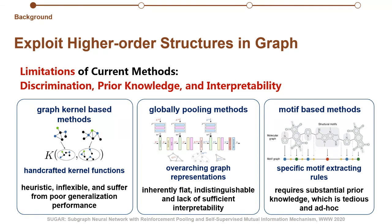The graph kernel-based methods rely on handcrafted kernel functions, which are heuristic, inflexible, and suffer from poor generalization performance. The global pooling methods generate overarching graph embeddings, which are inherently flat, indistinguishable, and lack sufficient interpretability. The motif-based methods need specific motif-extracting rules, which require substantial prior knowledge, which is tedious and ad-hoc.